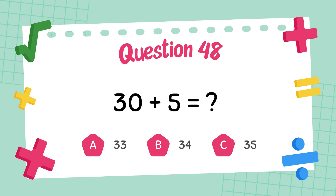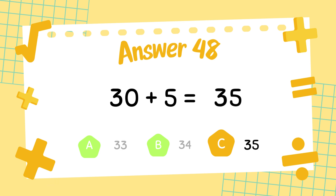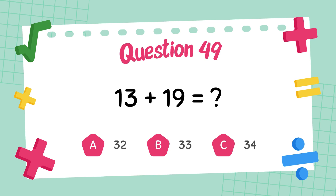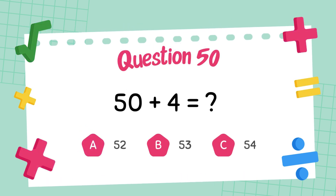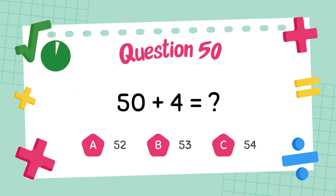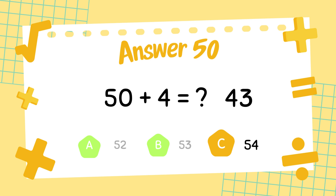What is 30 plus 5? The answer is 35. What is 13 plus 19? The answer is 32. What is 50 plus 4? The answer is 54.